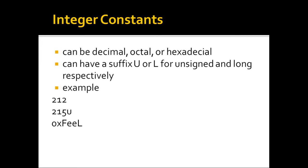Hexadecimal constants can have a suffix U for unsigned or L for long. For example, 212, 2112, or 215U means 215 unsigned — unsigned means it cannot receive a negative value. 0xFEEL means the number is hexadecimal (indicated by 0x) and stored as a long value (indicated by L). If a number starts with 0, it is in octal; 0x means it is hexadecimal.